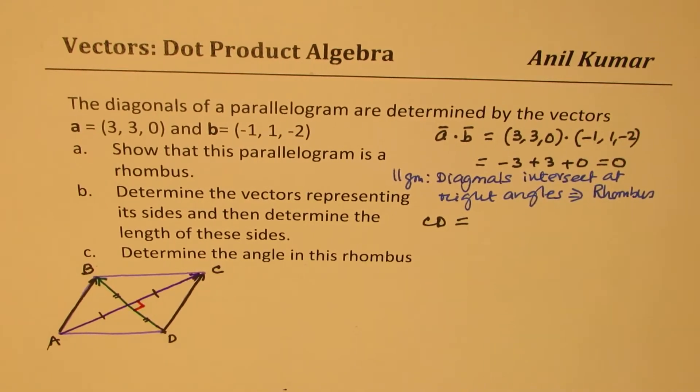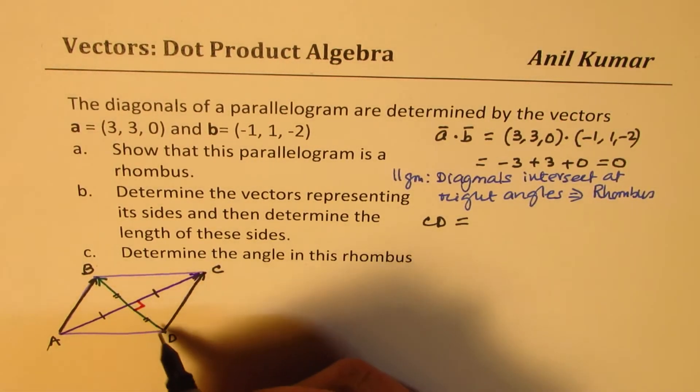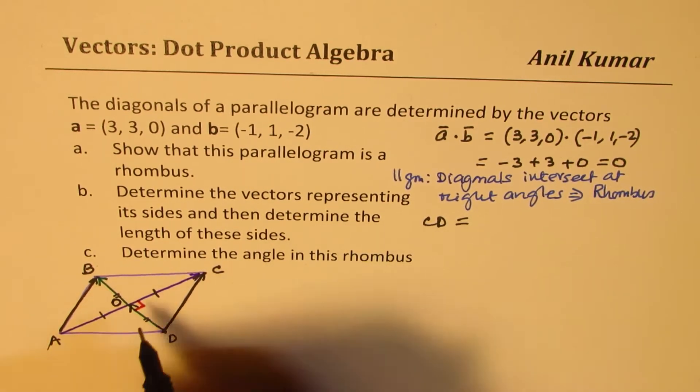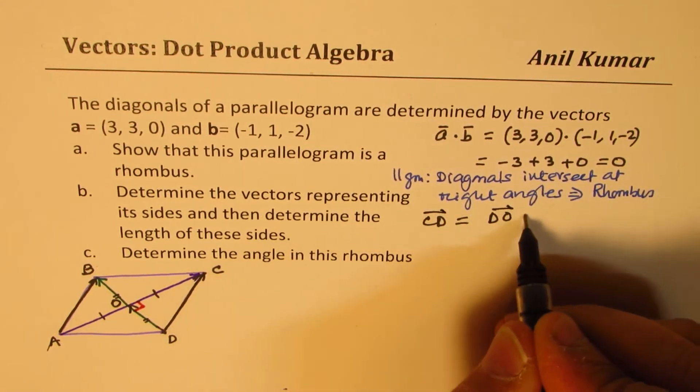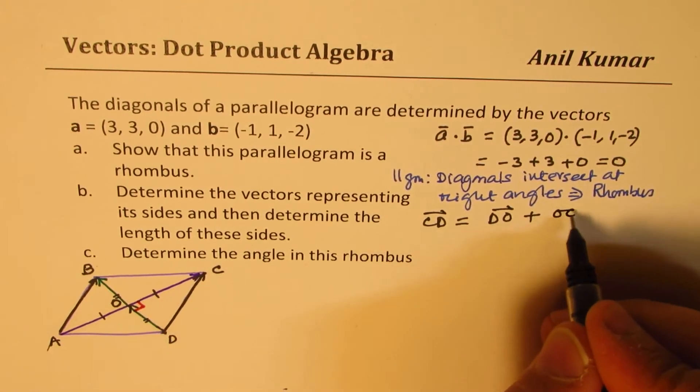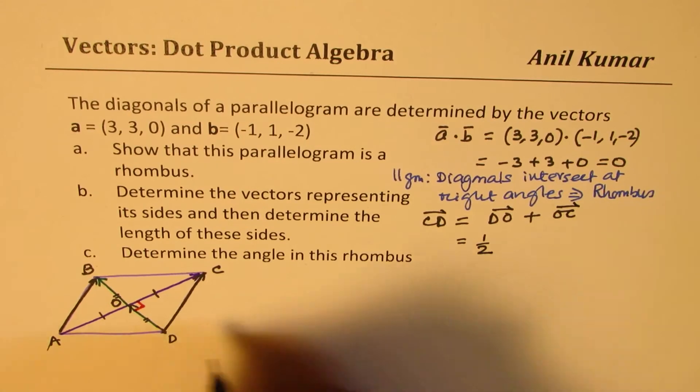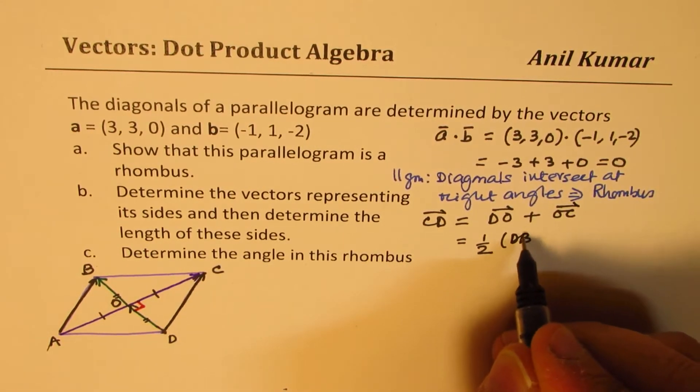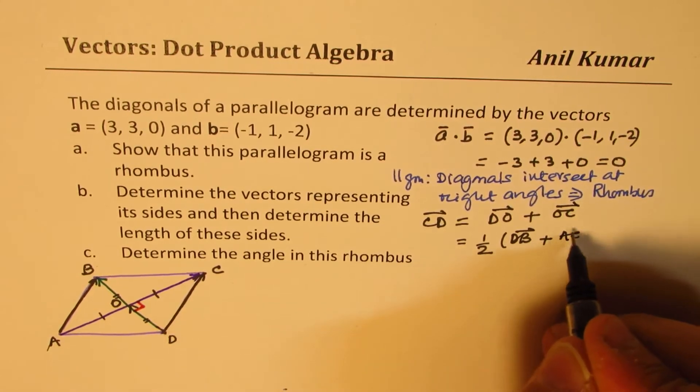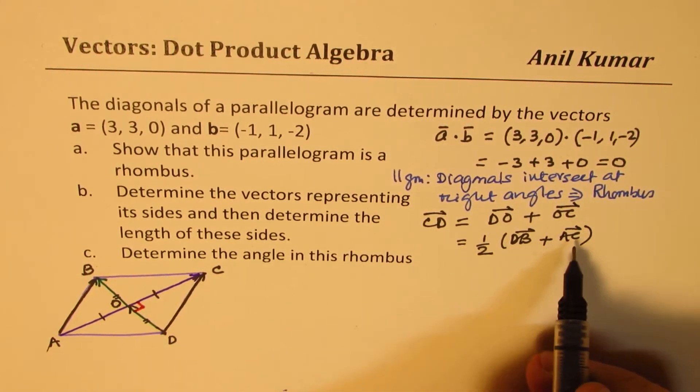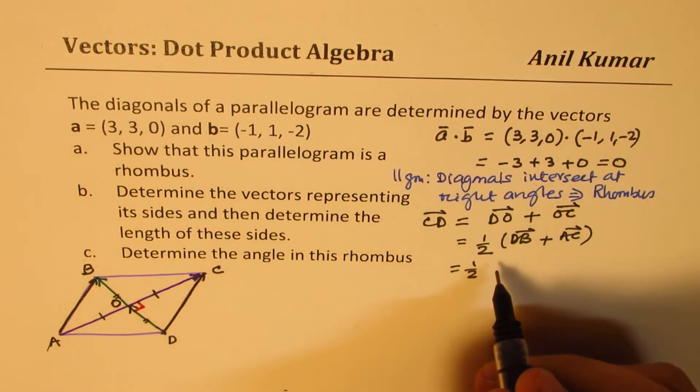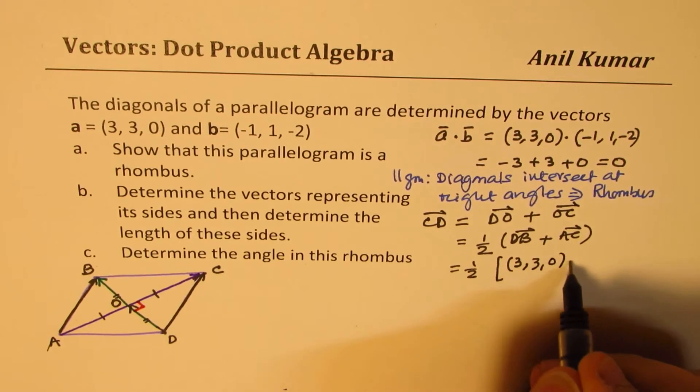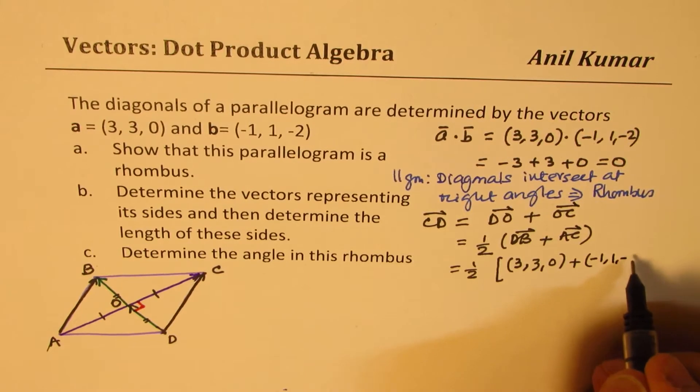So what we see here is to find C to D, it is combination of, let's say O is the center point. It is equal to D, O plus O to C. Which is half of D, B plus A, C. Now D, B and A, C are given to us as vectors A and B. So it is half of the sum of the these two vectors. Let me write this as 3, 3, 0, plus minus 1, 1, minus 2.